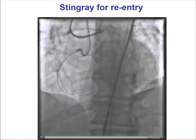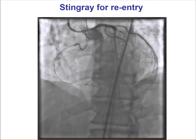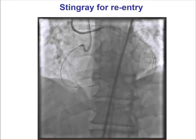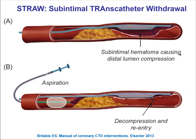Here is the Stingray balloon inflated in the distal right coronary artery. We can see that there is some compression of the distal true lumen, most likely by hematoma formation in the subintimal space. This is not uncommon in subintimal dissection reentry. One way to address this is by using the so-called STRAW technique — subintimal transcatheter withdrawal — in which the goal is to decompress the hematoma by advancing a second over-the-wire balloon and aspirating through it, re-expanding the lumen distally and facilitating reentry.